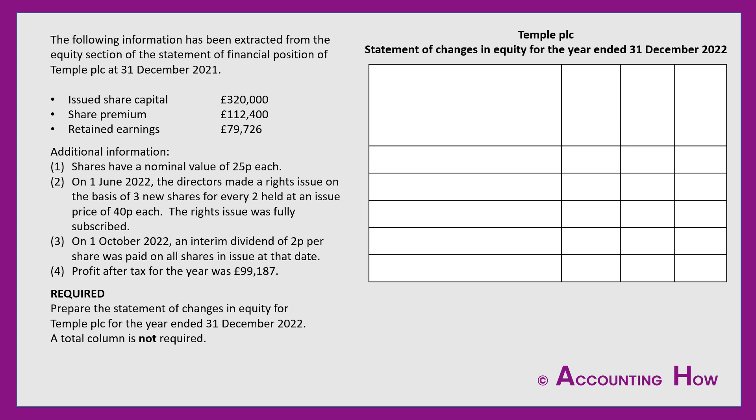The purpose of a statement of changes in equity is explained in its name — it's a document that explains to stakeholders how the items within a company's equity section have changed during the year. The first thing I need to do is create the columns I need — one for each item Temple PLC has within its equity section: issued share capital, share premium, and retained earnings. I'll bring those balances forward from 31st December 2021 to 1st January 2022 as my starting position, then work through the additional information to see what happened during the year.